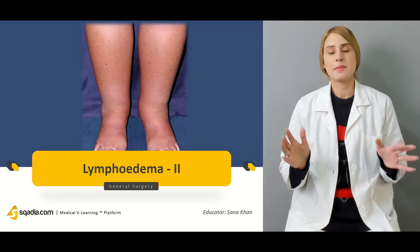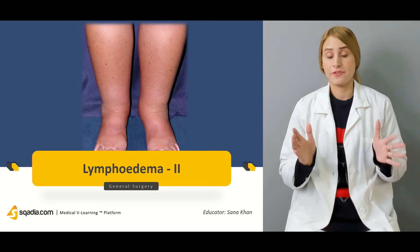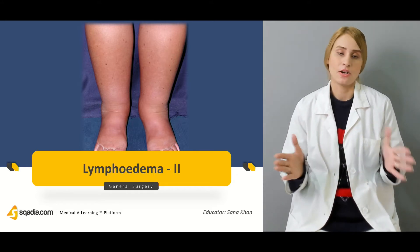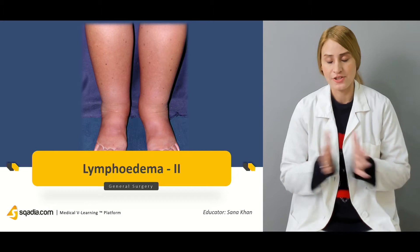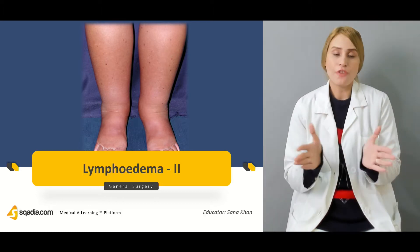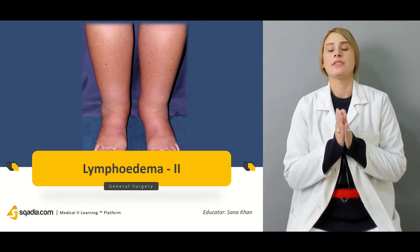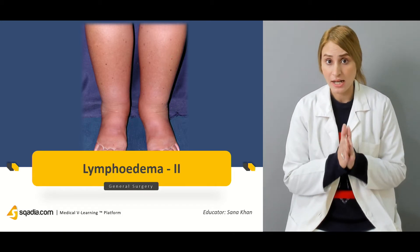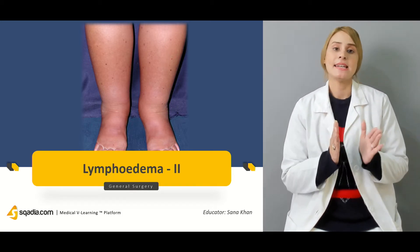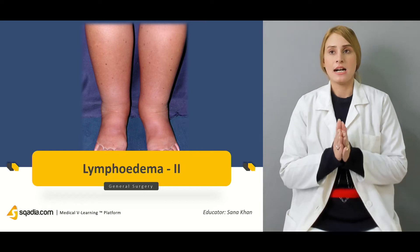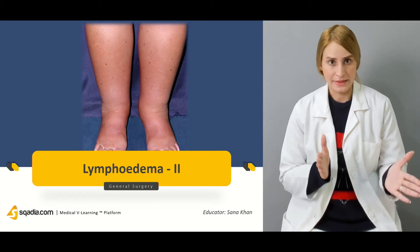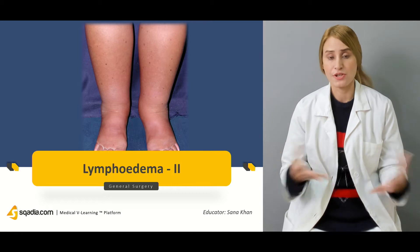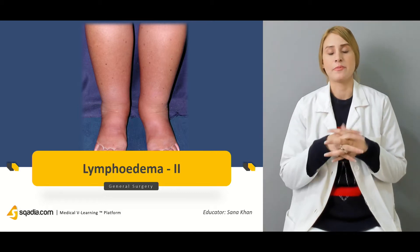We have started discussing about the different vascular components of the general surgery course. So far, we have been discussing about the arterial surgery and the venous surgery, and we have started the lymphatic part of the general surgery as well, and the conditions which are related to the lymphatic system.